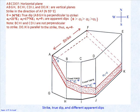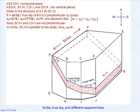In the diagram, the strike is in the direction A-F, north 55 degrees east. The true dip theta equals 36 degrees southeast. The plane A-B-G-H is perpendicular to the strike. The apparent dips are: alpha 1 equals 21 degrees east; alpha 2 equals 17 degrees northeast; and alpha 3 equals zero. Theta is greater than alpha 1, alpha 1 is greater than alpha 2, and alpha 2 is greater than alpha 3. The plane D-E-J-K is parallel to the strike, so alpha 3 equals zero.